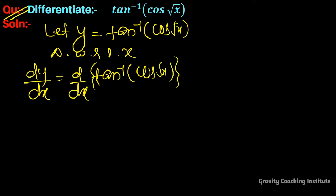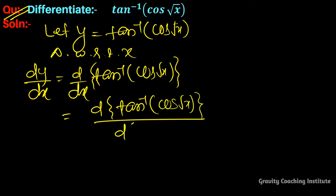We cannot directly use the tan inverse formula here, so we will use chain rule. Derivative of tan inverse cos root x with respect to cos root x, into the derivative of cos root x with respect to x.